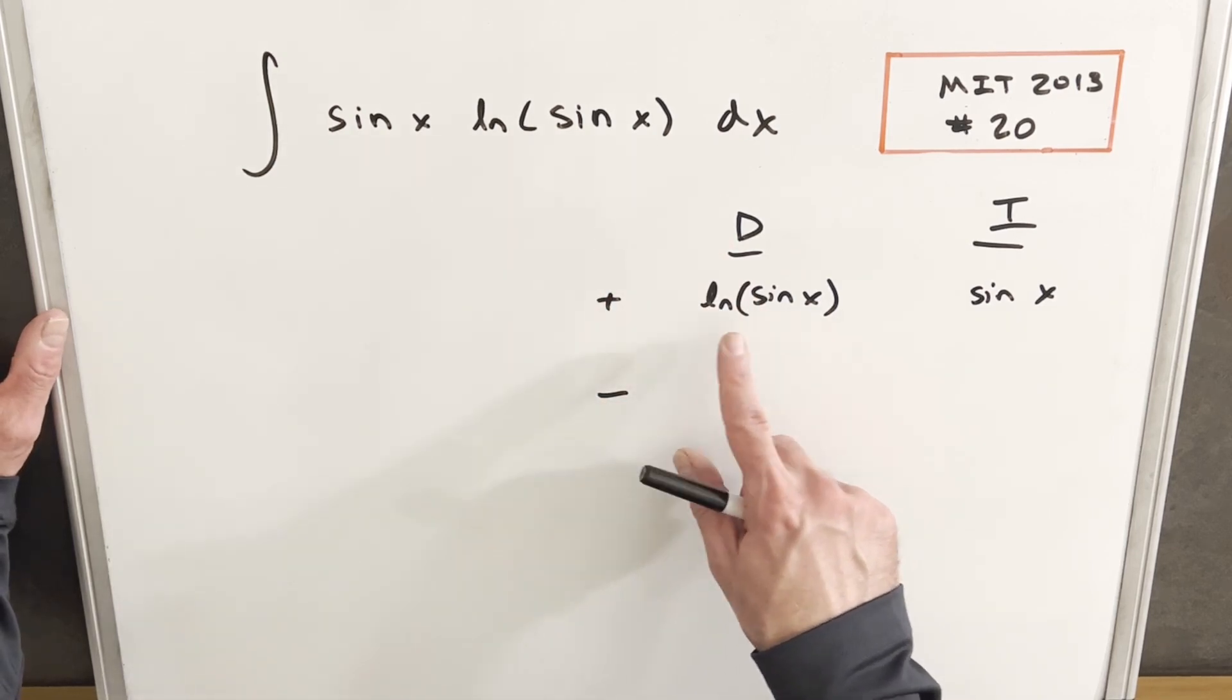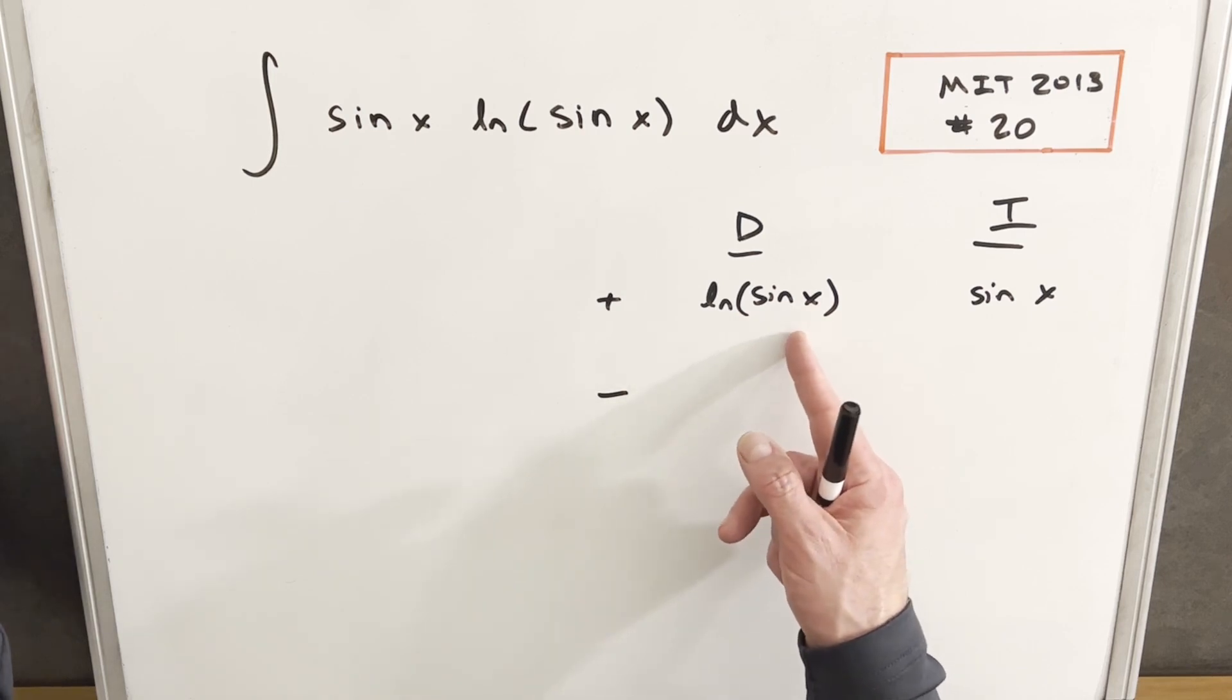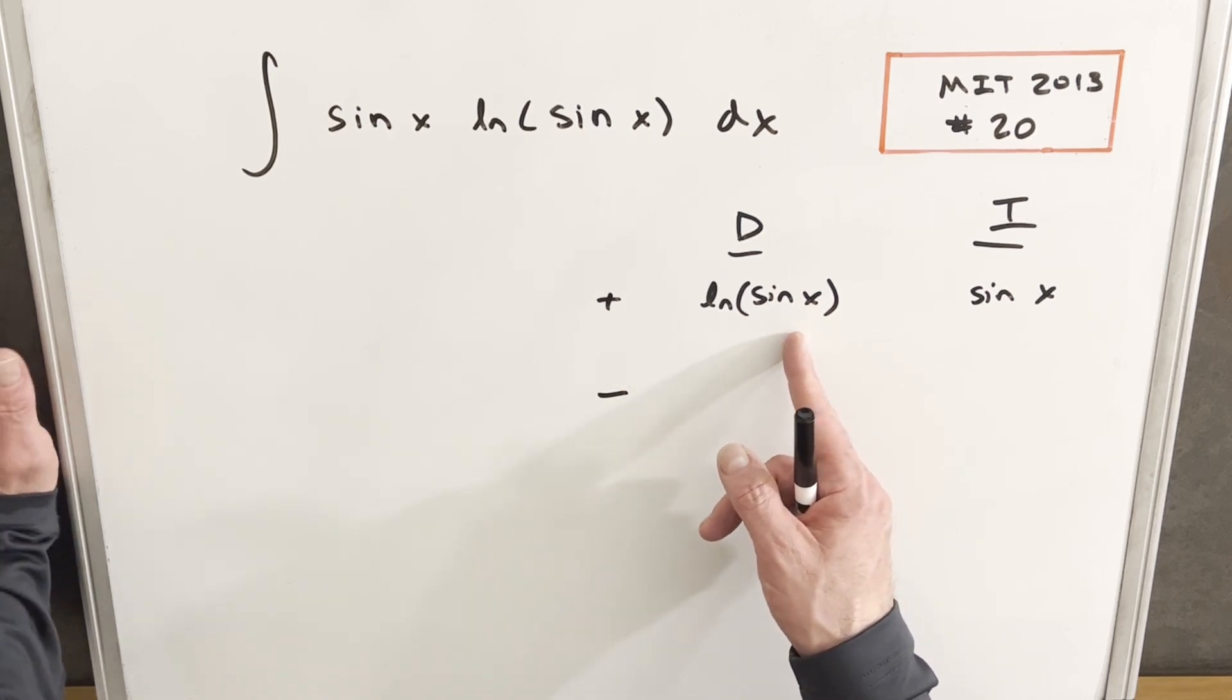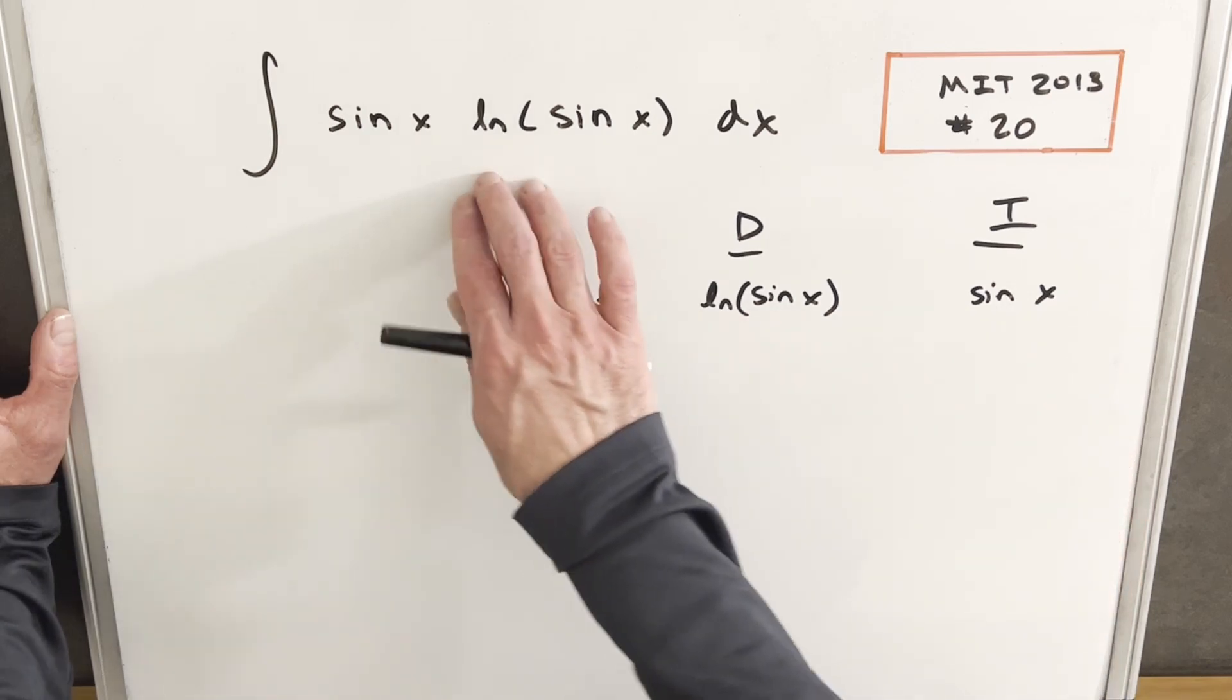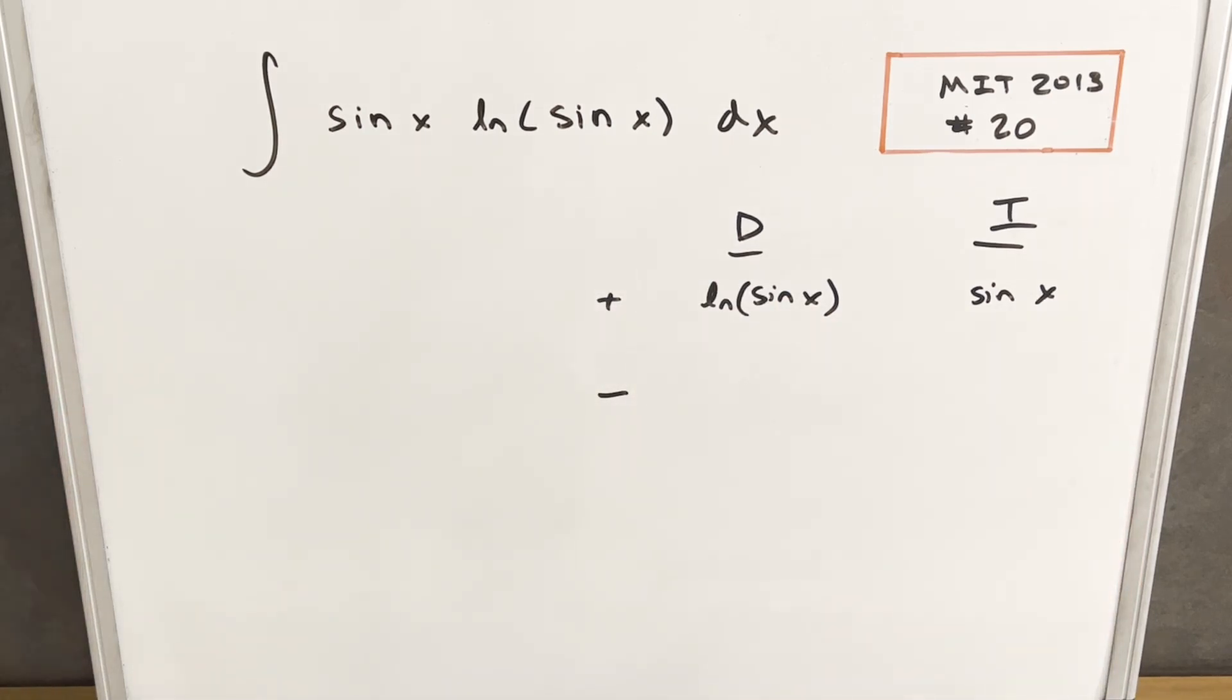So we're going to choose to differentiate natural log sine x because we don't have a good way to really integrate that, right? But we'll integrate sine x, and we know how to do that. So by having that choice, we can find an easier path forward.